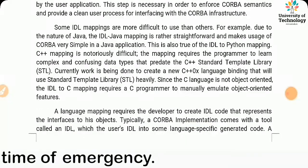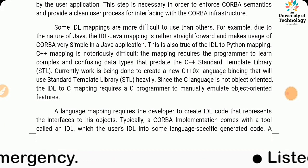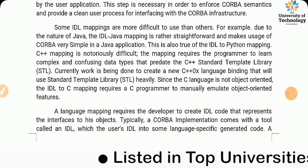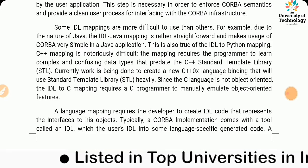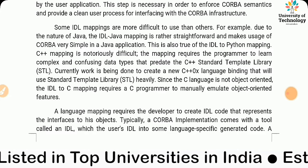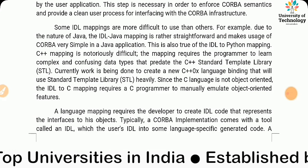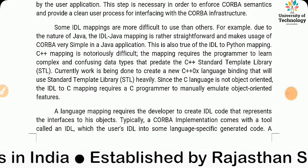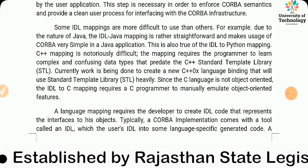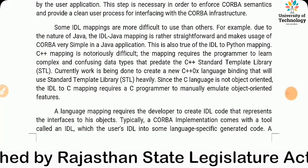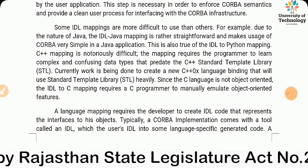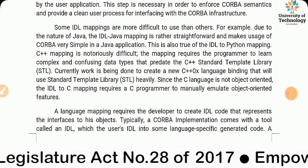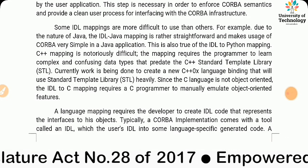This mapping requires the developer to create IDL code that represents the interfaces to his objects. Typically, a CORBA implementation comes with a tool called an IDL compiler, which converts the user's IDL code into some language-specific generated code. A traditional compiler then compiles the generated code to create the linkable object files for the application.